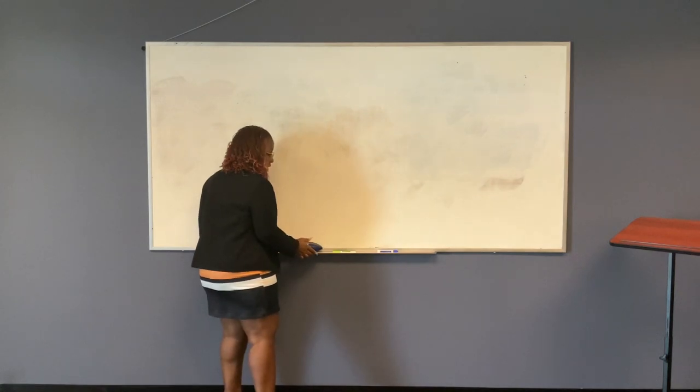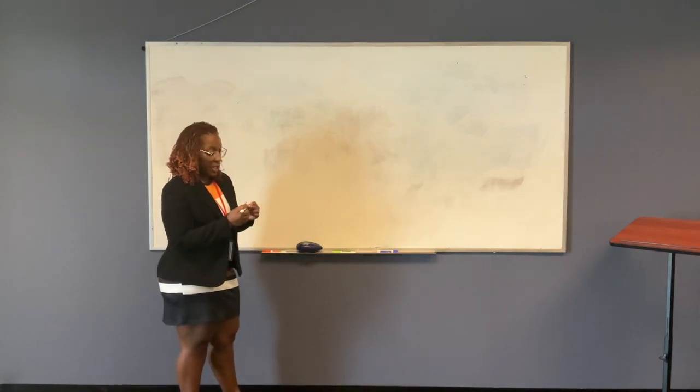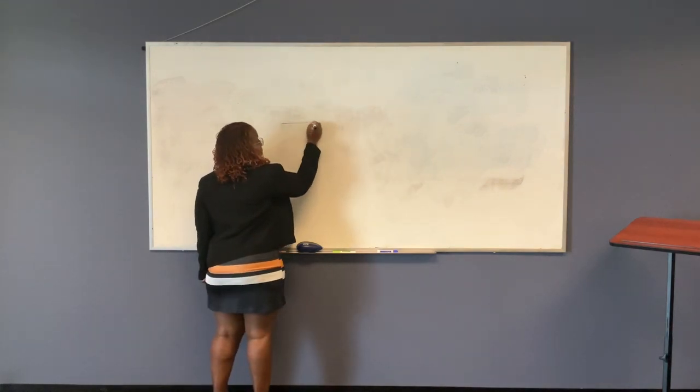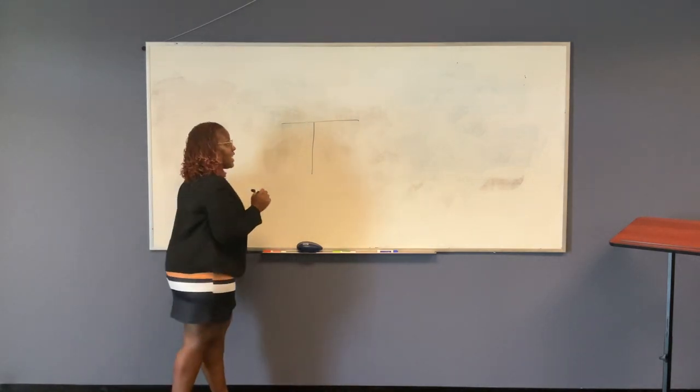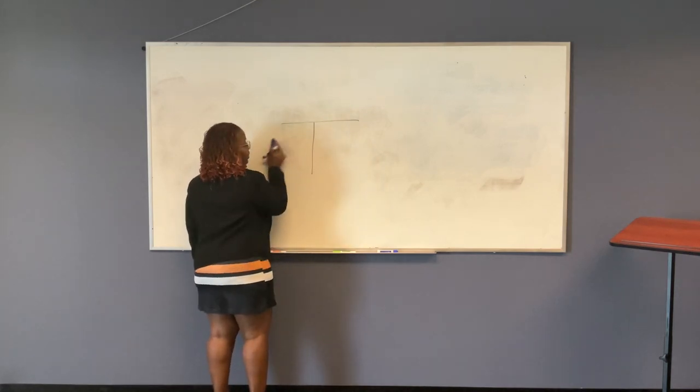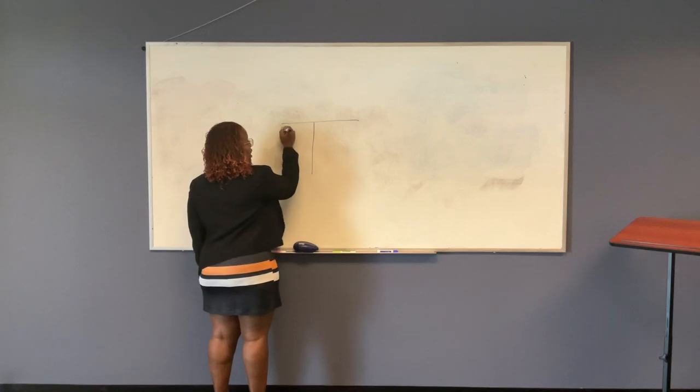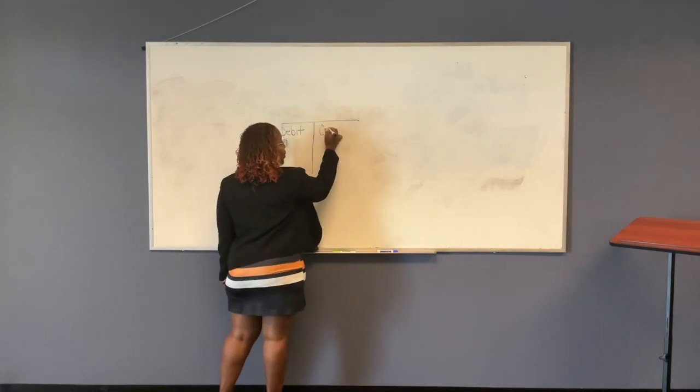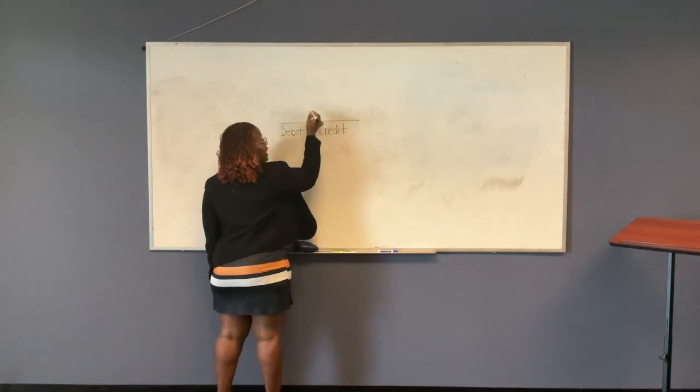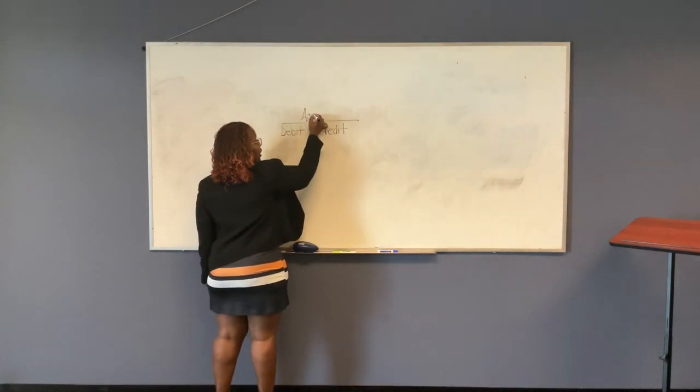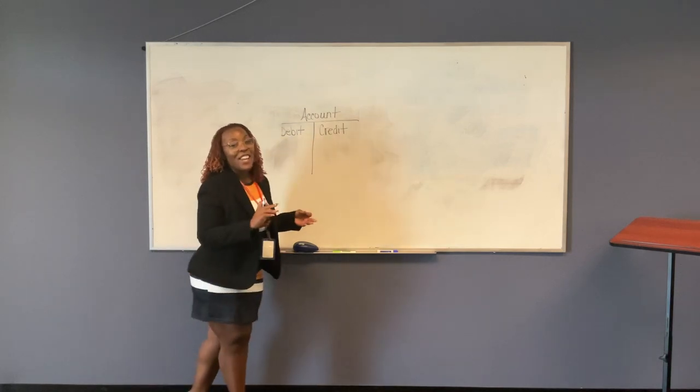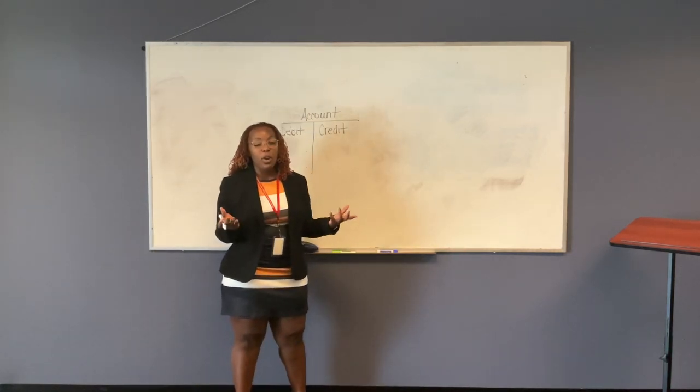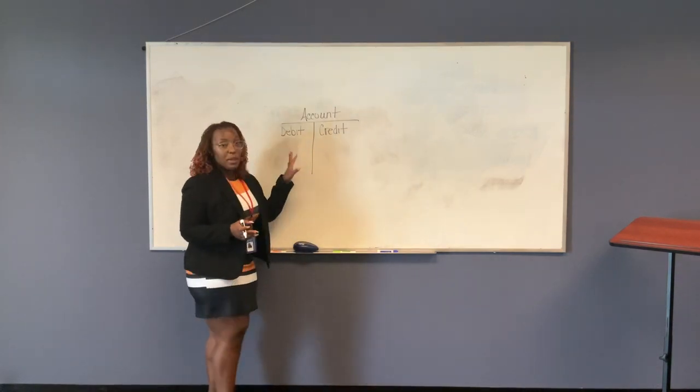When we talk about the accounting equation, we also talk about a T account. A T account looks like what it is. A T. You have your left side and your right side. Your left side is your debit side. Your right side is your credit. The top is the account. So this is what you would call a T account. Your assets, your liabilities, your revenues, your expenses. All of those are types of accounts. So you have your debit and you have your credit.